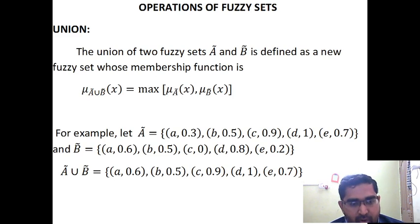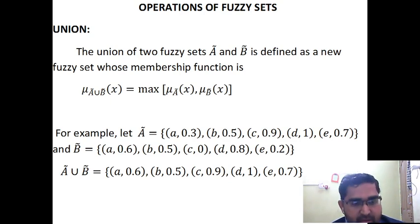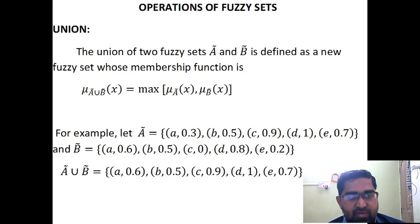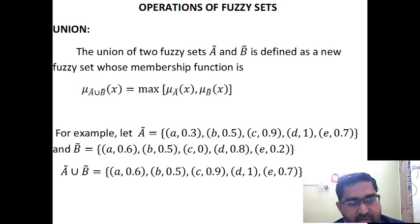Now we know the operations of Fuzzy Sets. Most of the operations of crisp sets are applicable in Fuzzy Sets also. I will cover three operations. First: union. The union of two Fuzzy Sets A and B is another new Fuzzy Set, where the membership value μ_{A∪B}(x) = max(μ_A(x), μ_B(x)).